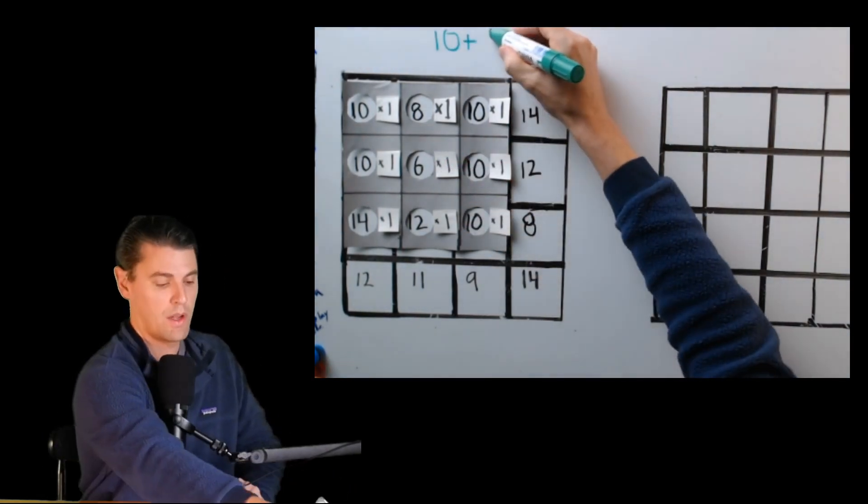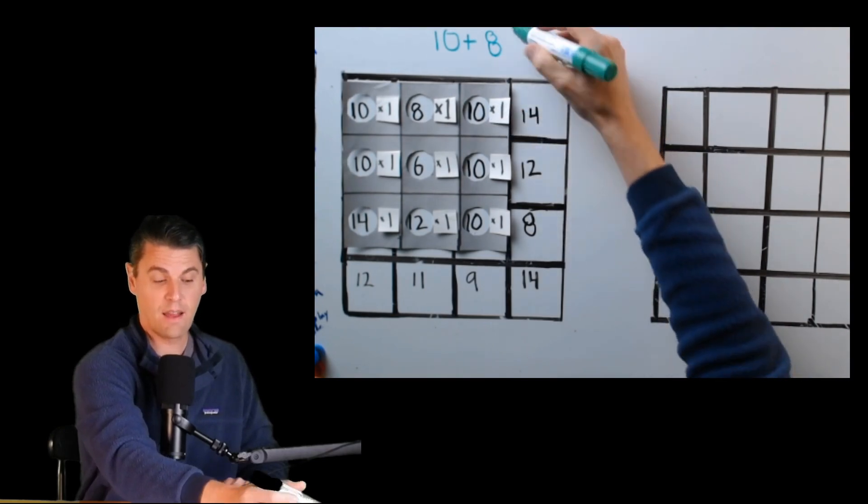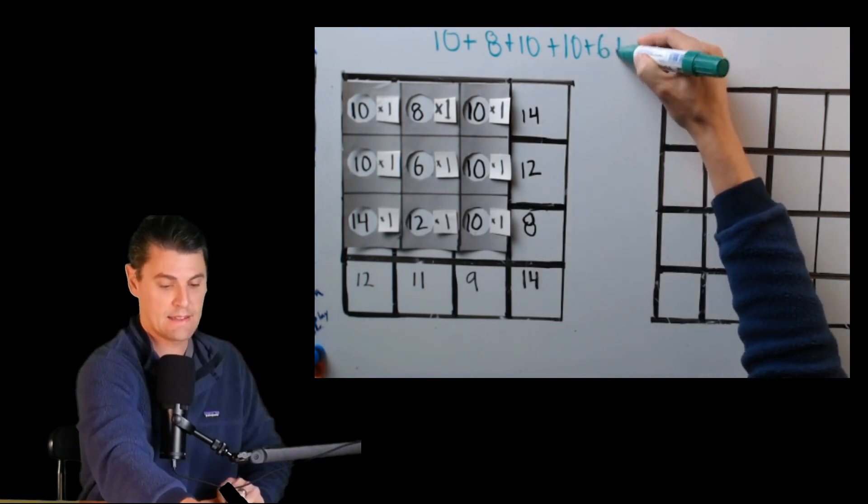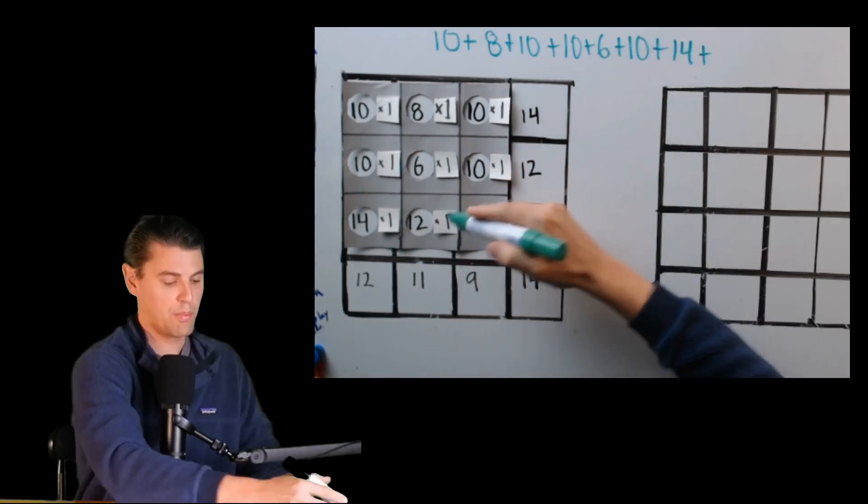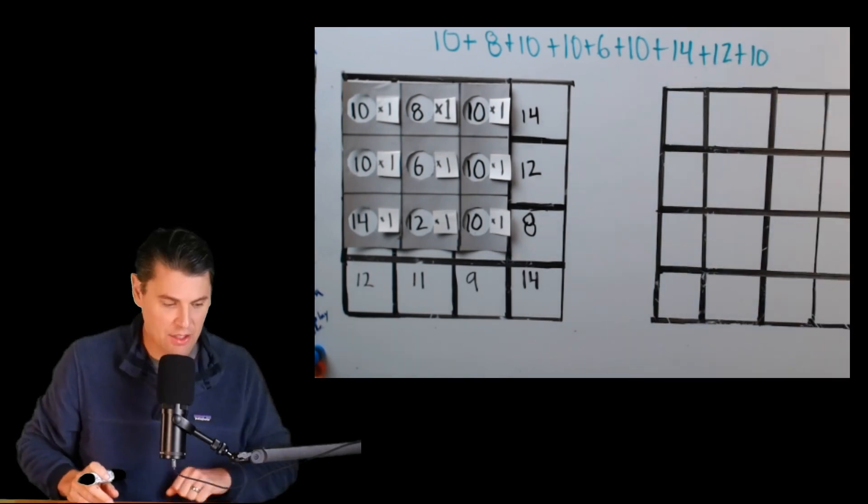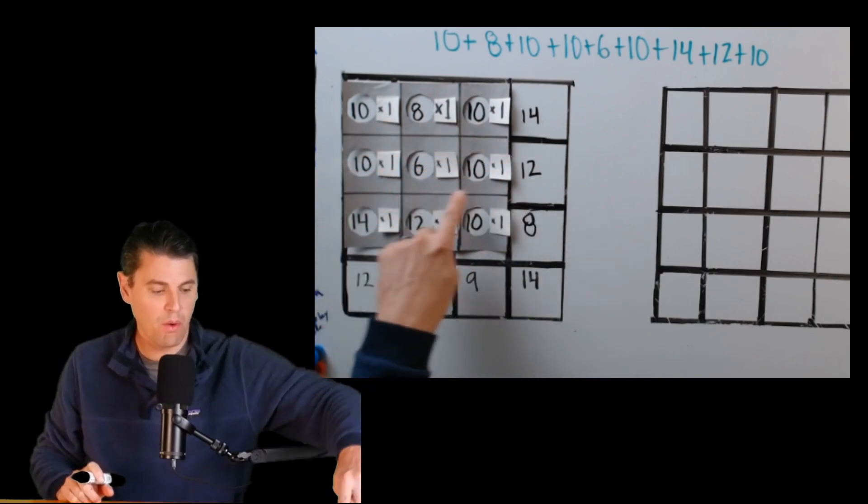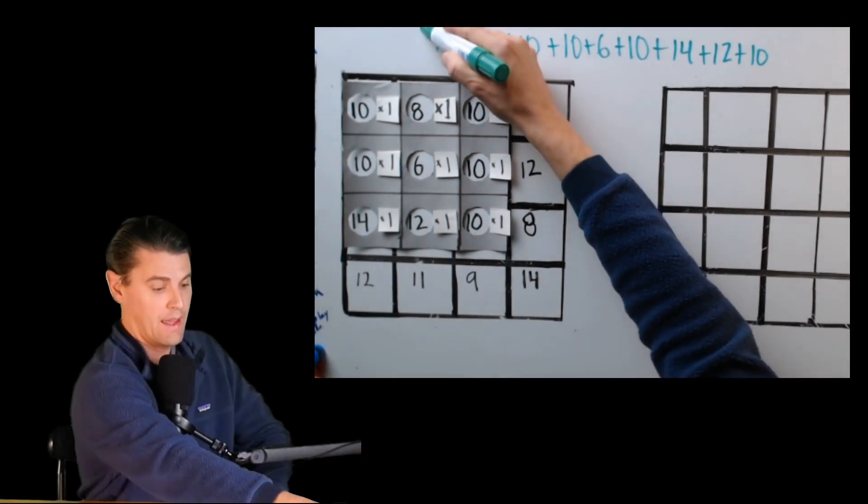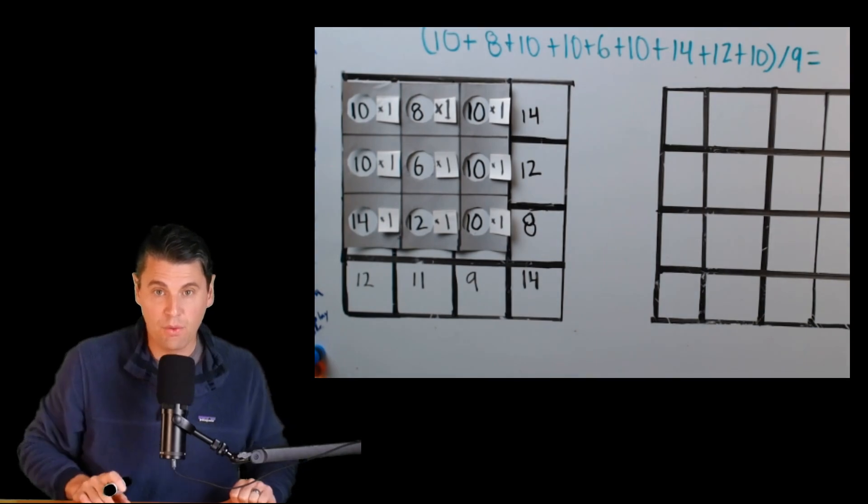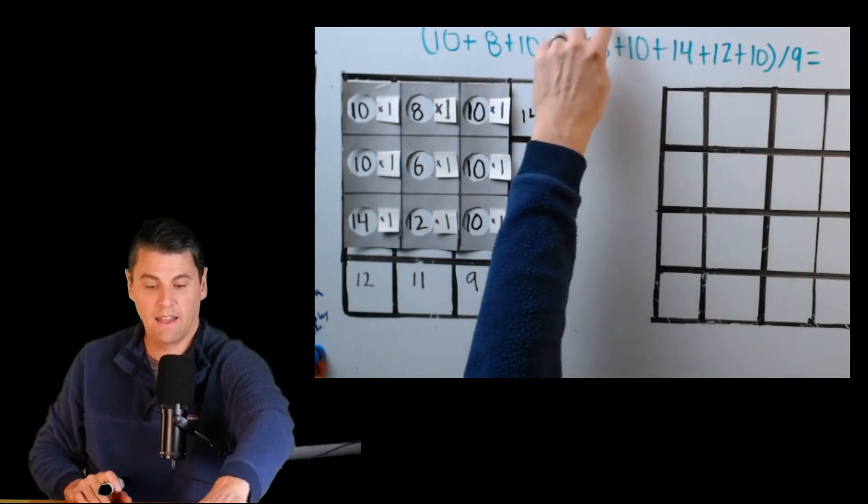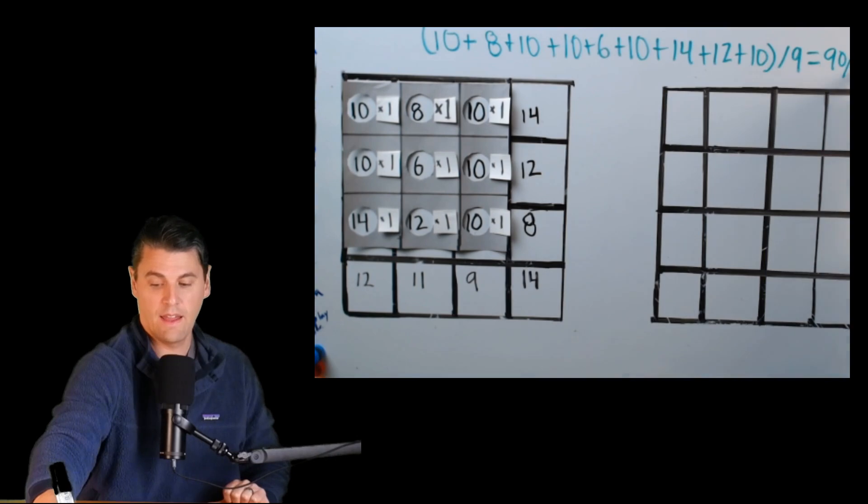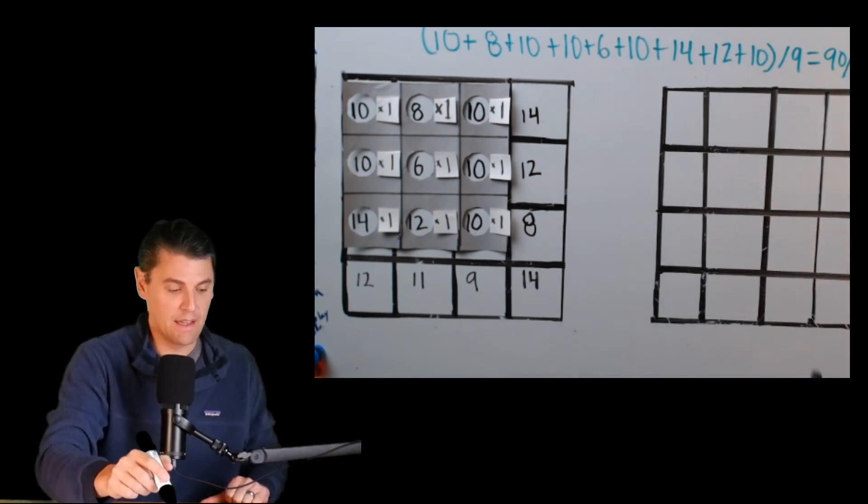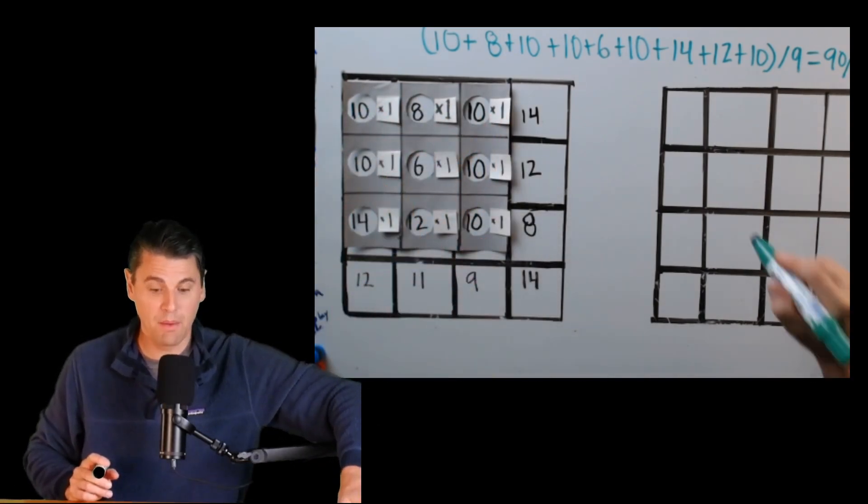I'm going to have 10 times 1 is 10, plus 8 times 1 is 8, plus 10 times 1 is 10, plus 10 times 1 is 10, plus 6 times 1 is 6, plus 10, plus 14, plus 12, plus 10. And then actually, this little kernel here, these numbers here, we want these actually to all add up to 1. Right now, they all add up to 9. We're going to take this whole thing, and then we're going to divide it by 9. And if you do the math, if we add all these things up, what we're going to get, this part right here is 90, and then we divide that by 9. 90 divided by 9 is just equal to 10.